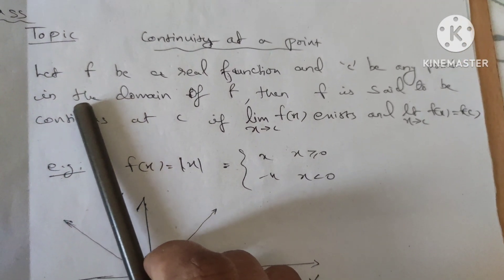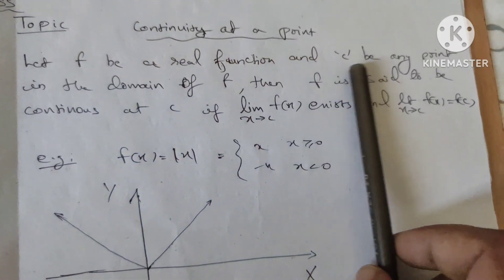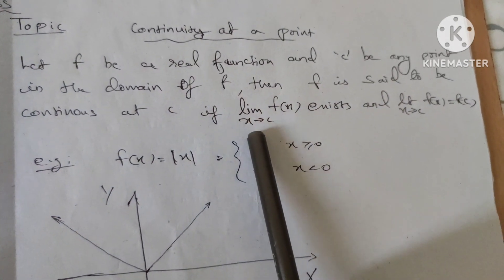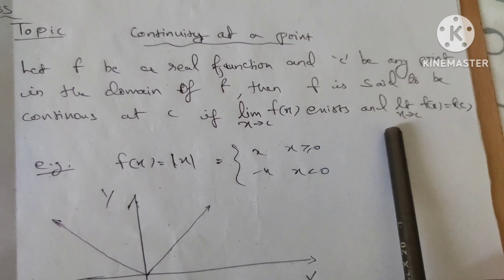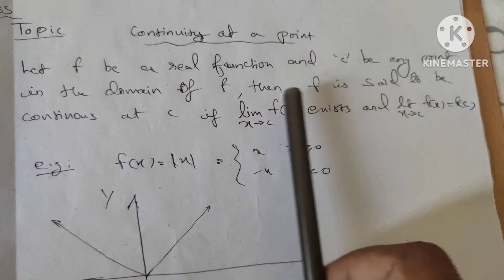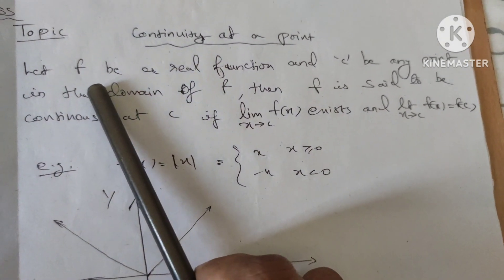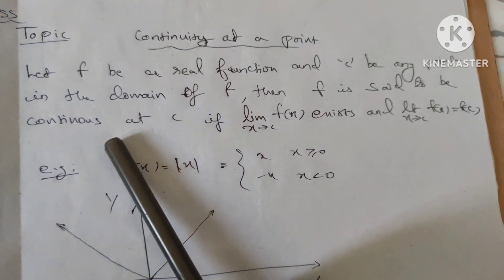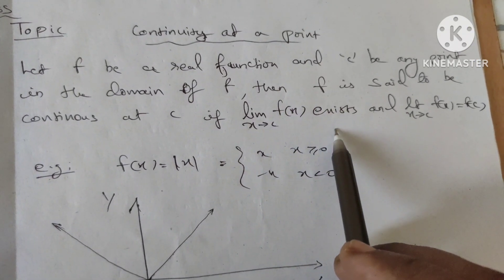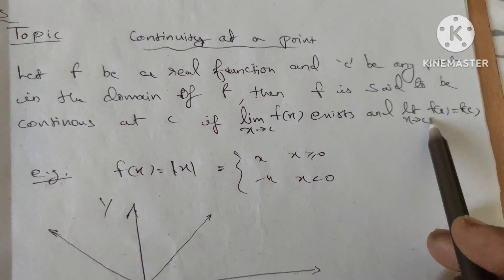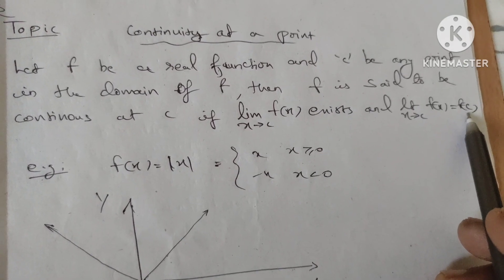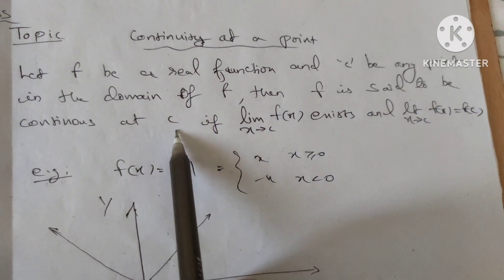What is continuity? What is the definition? Let f be a real function and c be any point in the domain of f. Then f is said to be continuous at c if the limit as x tends to c of f(x) exists, and the limit as x tends to c of f(x) is equal to f(c). What does it mean? The function limit exists and is equal to the value of the function at the point c, where c is a point in the domain of f.